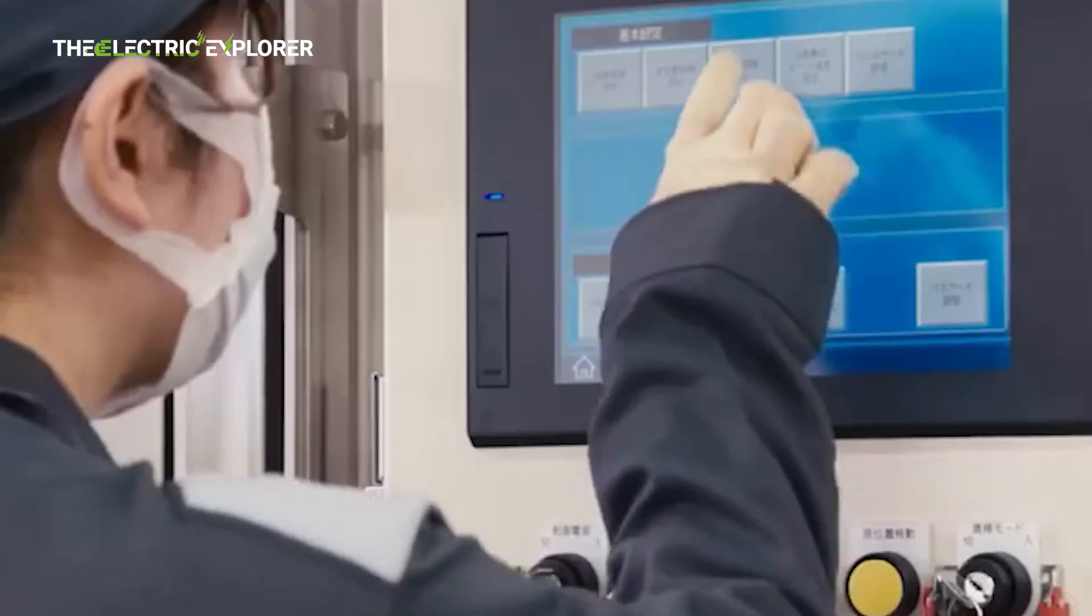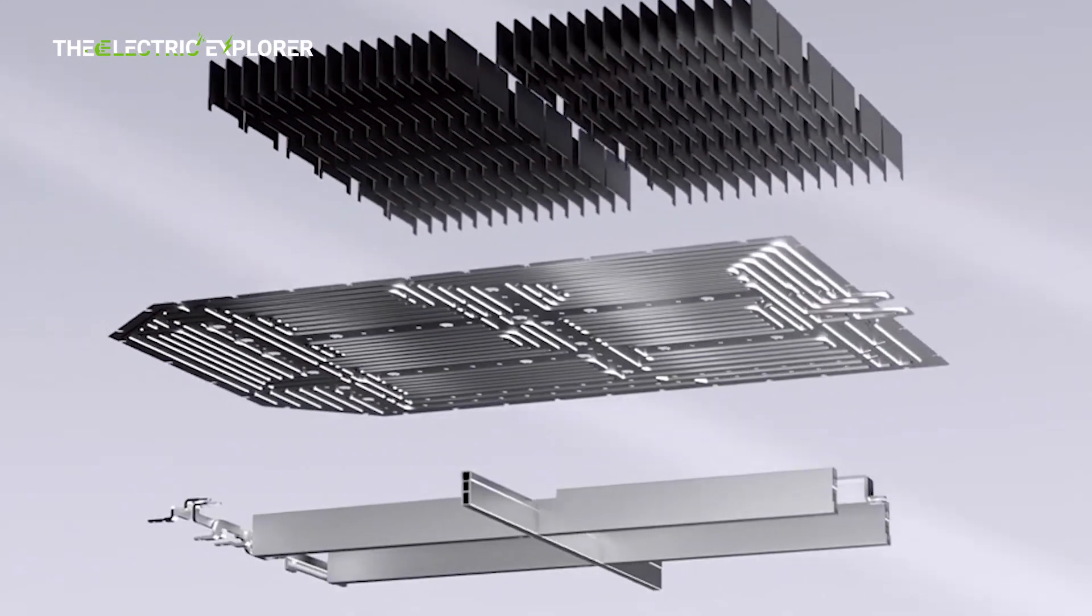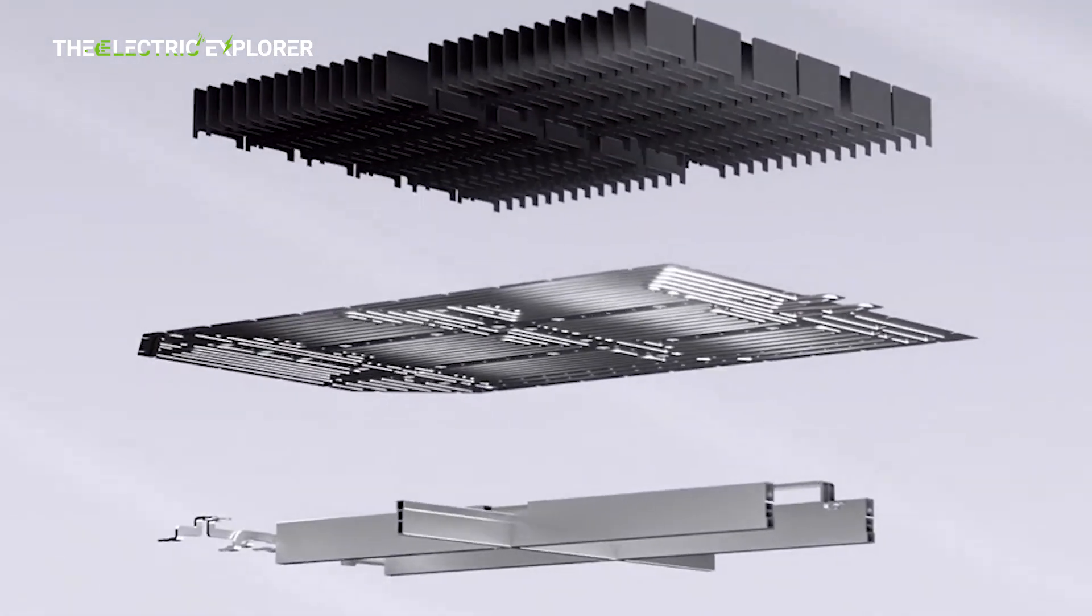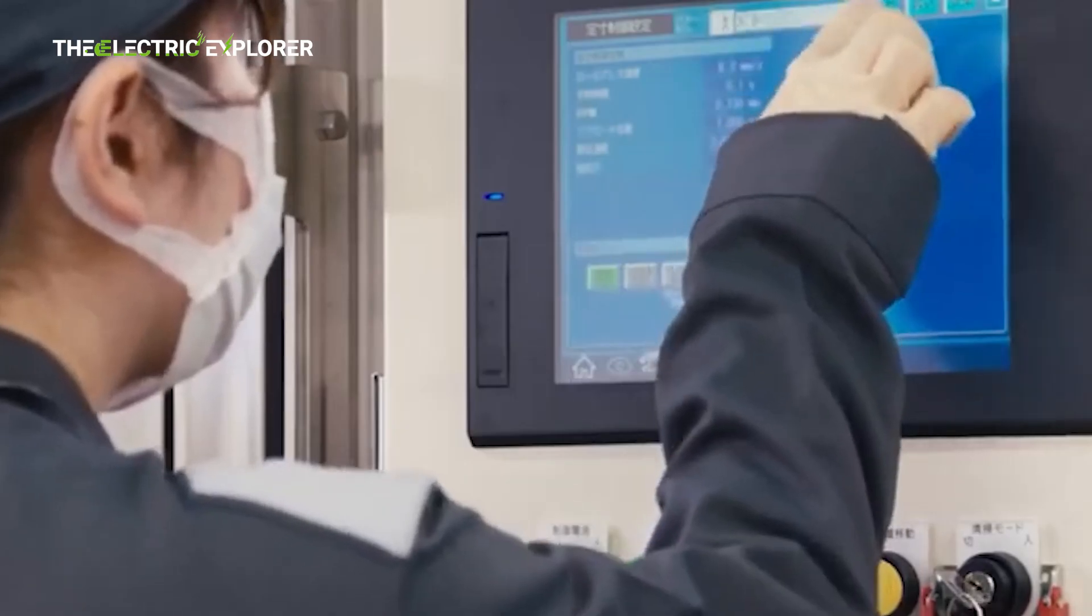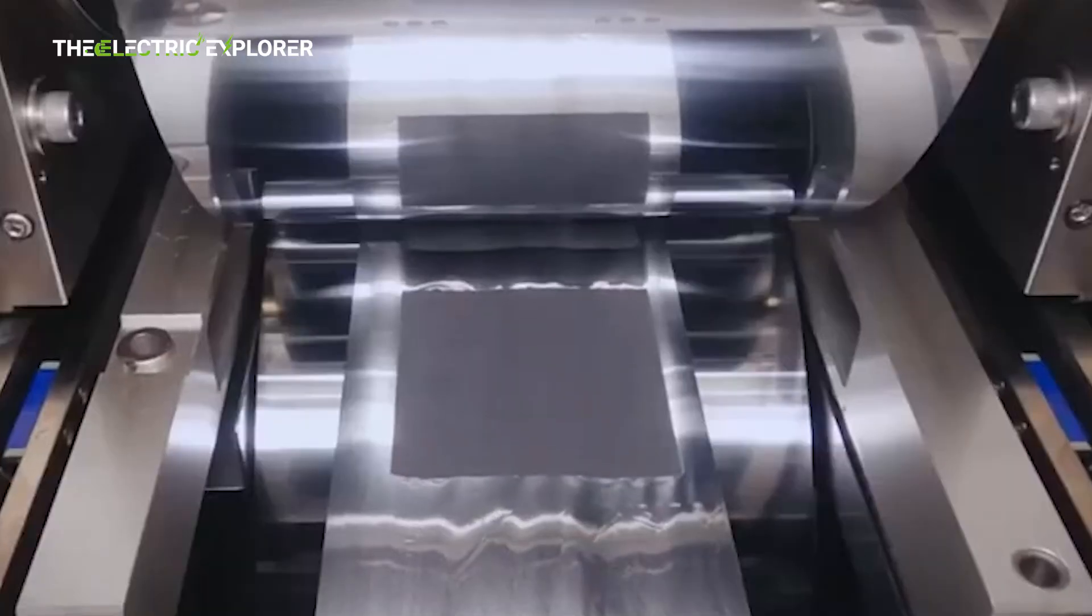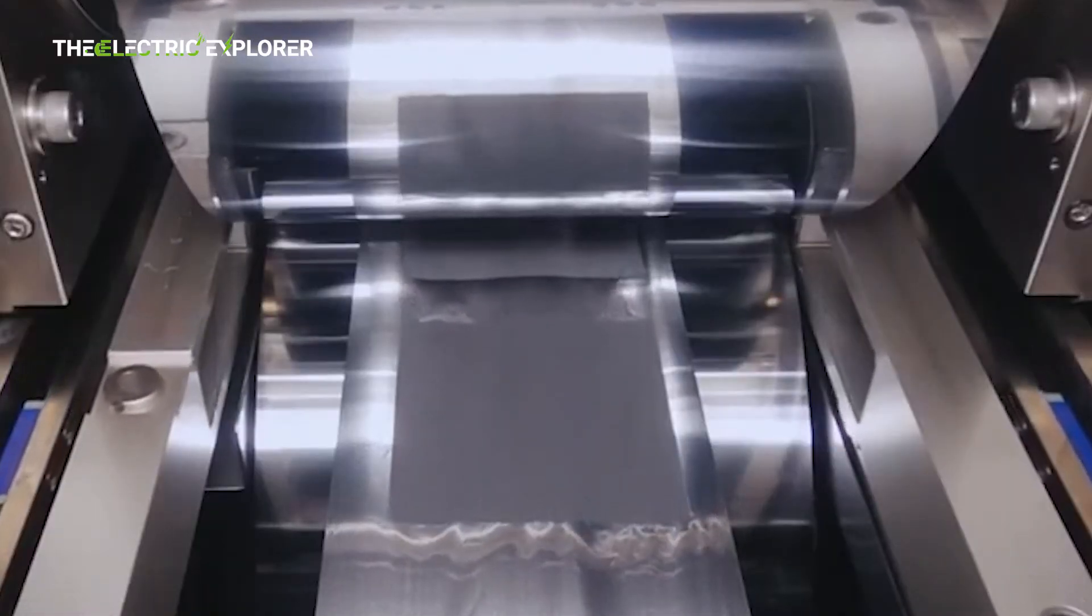BMW has already begun road-testing solid-state versions of the i7 electric sedan. CATL and SAIC are targeting small-scale production of solid-state batteries by 2027. Toyota, which leads in patent filings globally for solid-state tech, aims to launch commercial models between 2027 and 2028.